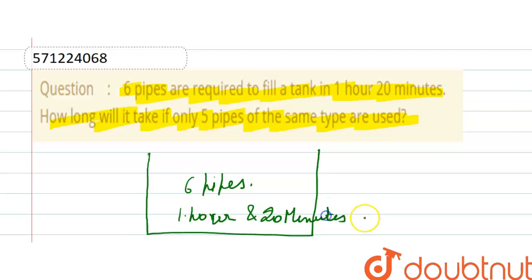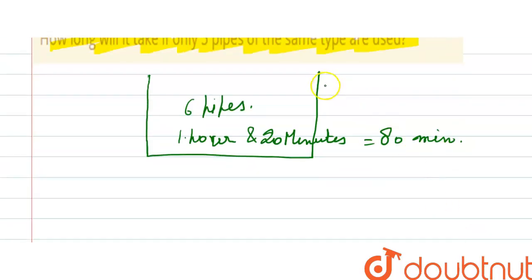That is equal to 80 minutes. So now the capacity of the tank is L. So if you fill the tank by 5 pipes then the capacity remains the same.